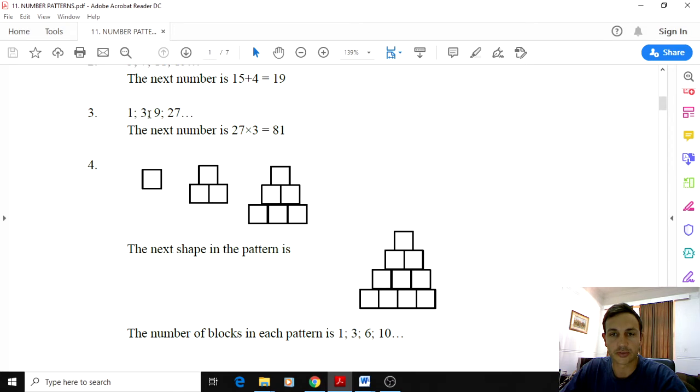The third one is a little bit different because it's not addition or subtraction. Now we have multiplication. So you go from 1 to 3 you have to multiply by 3. From 3 to 9 you multiply by 3. From 9 to 27 you multiply by 3. So to go from 27 to the next term you'll have to multiply by 3 and you'll get 81.